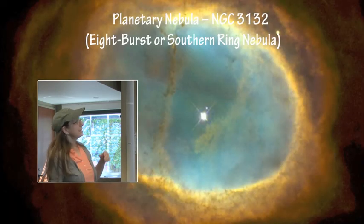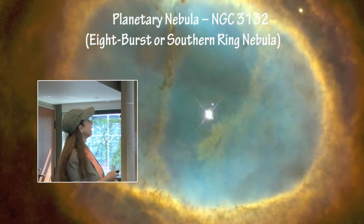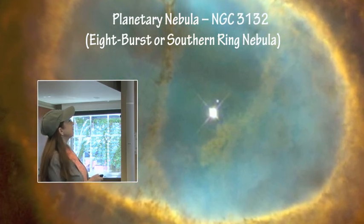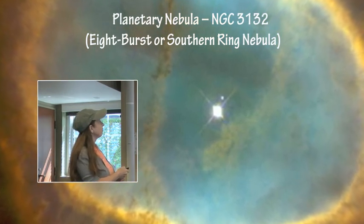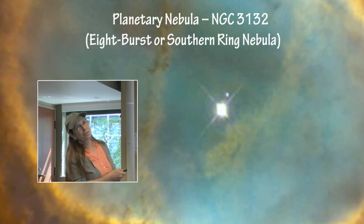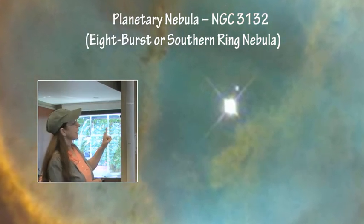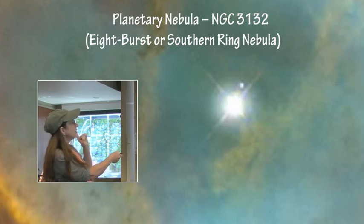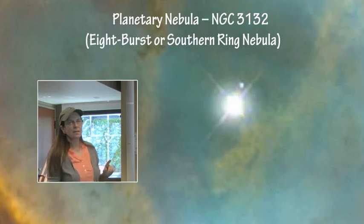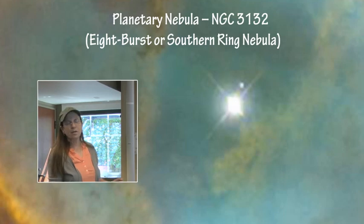Here is another planetary nebula that I love. It is a Hubble image of the 8 Burst or Southern Ring Nebula. The reason I like to show this one is this: If you had to identify the white dwarf inside this planetary nebula, you might want to choose this one, but that's not true. This is a Hubble image, an optical image.